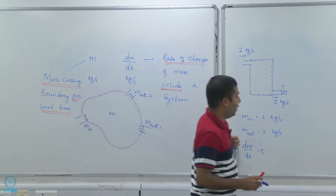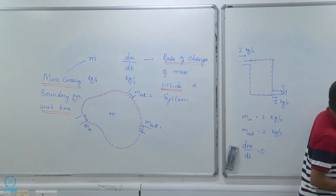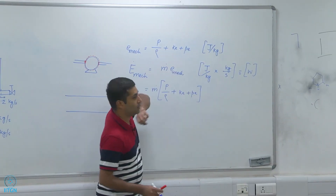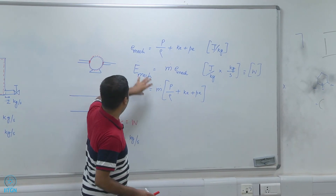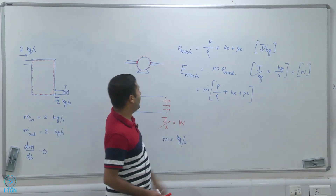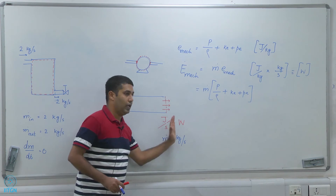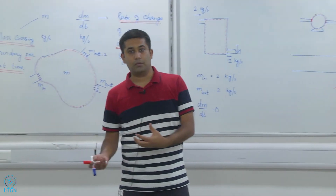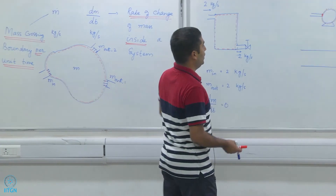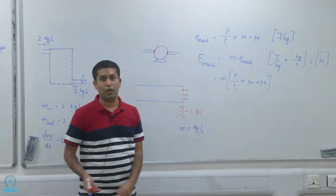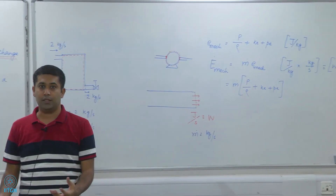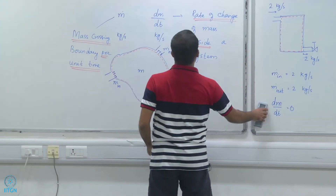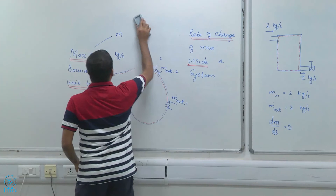Returning to E_dot_mech: I multiply m-dot by the specific mechanical energy e_mech to get the total rate of mechanical energy crossing the boundary — either into or out of the system. This is how I account for the energy carried by a flow. To get the total flow energy, I also need to add the internal energy.